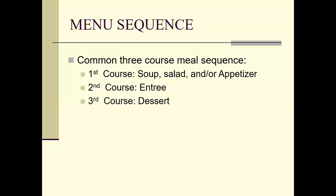The second course will be your entrée, and then your last course will consist of dessert. This is the traditional, most common three-course meal sequence. Some people don't necessarily want to eat dessert, so you could have a three-course meal consisting of a soup, a salad, then an entrée.